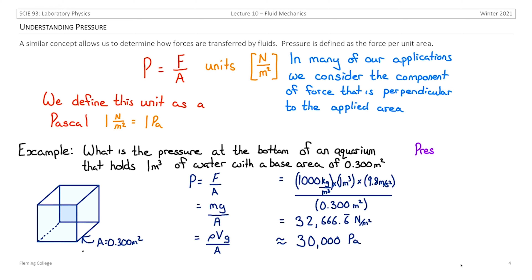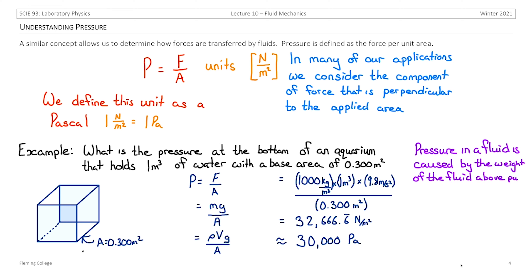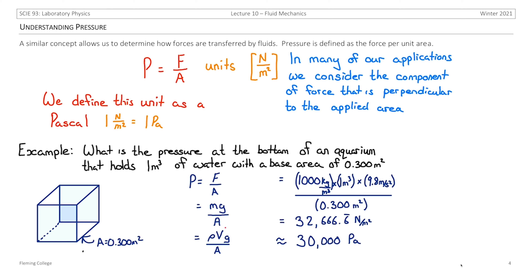This example shows that pressure in a fluid is caused by the weight of all the fluid above a position pushing down. Because the weight of the fluid depends on density and volume, the further down we go in an aquarium or a body of fluid, the more pressure we will experience.